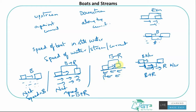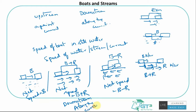The boat covers b minus r because it alone would have covered b kilometers in an hour, but the water pushes it r kilometers back. The scenario where water flow and boat direction are the same is called downstream, or along the current. When the boat goes in the opposite direction to the river flow, that's called upstream, or against the current.